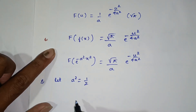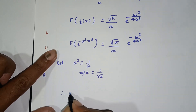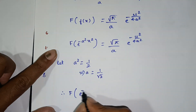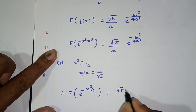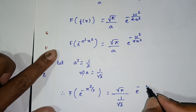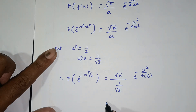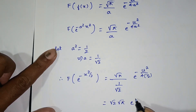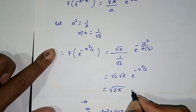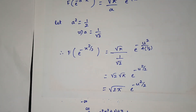Let a square equal to 1 by 2, which implies a equals 1 by root 2. Therefore F of e power minus x square by 2 is equal to root pi divided by a, that is 1 by root 2, times e power minus u square by 4 times 1 by 2. Since a square equals 1 by 2, the 2 cancels. The final answer is root 2 times root pi times e power minus u square by 2.